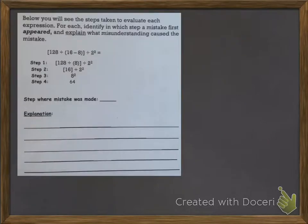Sometimes you will be given an order of operations problem that's already been solved, but it's been solved incorrectly. And you need to be able to identify in which step the mistake first appeared and explain what misunderstanding caused that mistake. When you see a problem like this, the easiest way to approach it is to solve the problem yourself off to the side and then compare what you did to the steps that that person did in their problem. And then you can identify any differences or mistakes and figure out how to fix them.